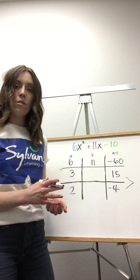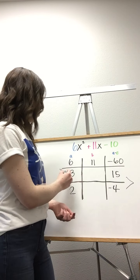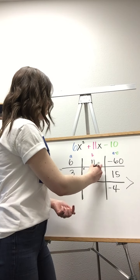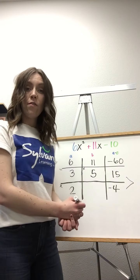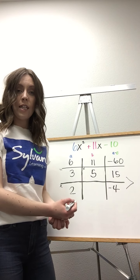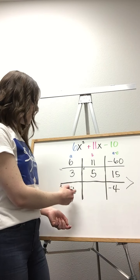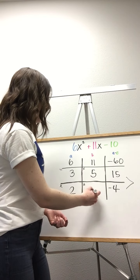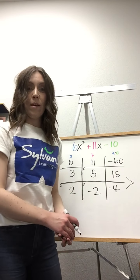Now let's do the final two boxes by moving horizontally. 3 times what gives me 15. I can plug in the number 5 there. 3 times 5 is 15. And our final box, 2 times what gives me negative 4. I know that negative 2 is my answer.